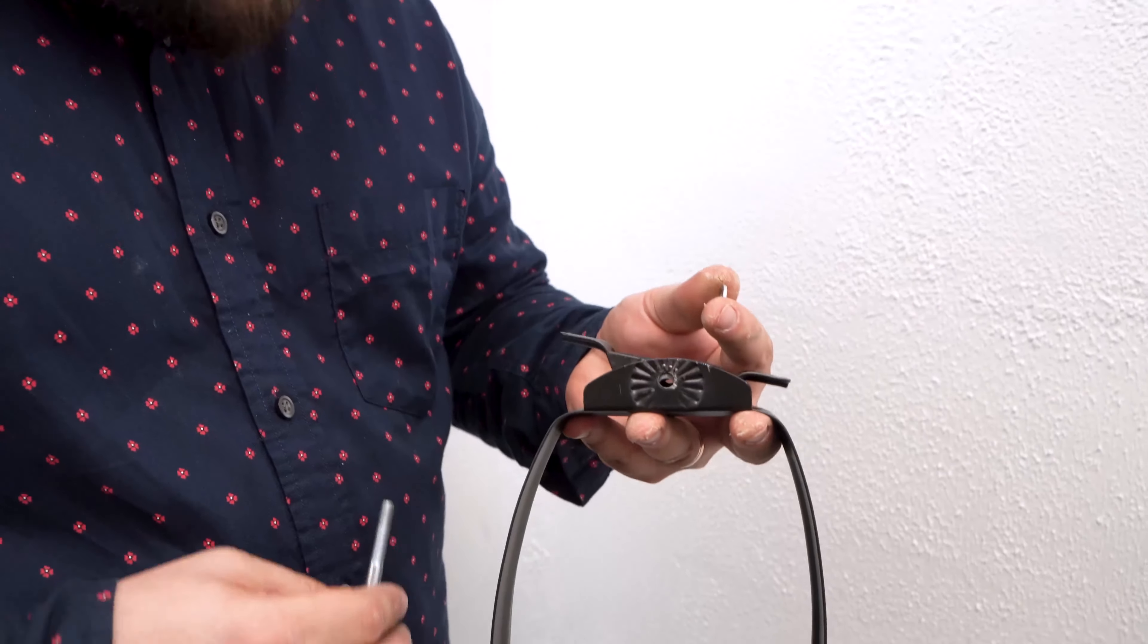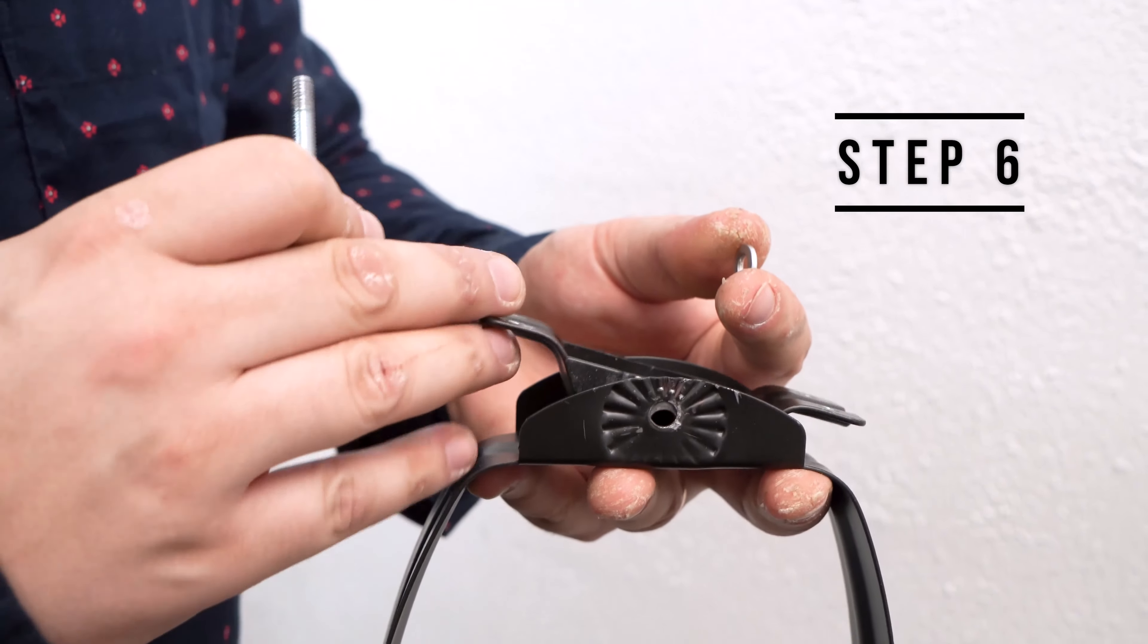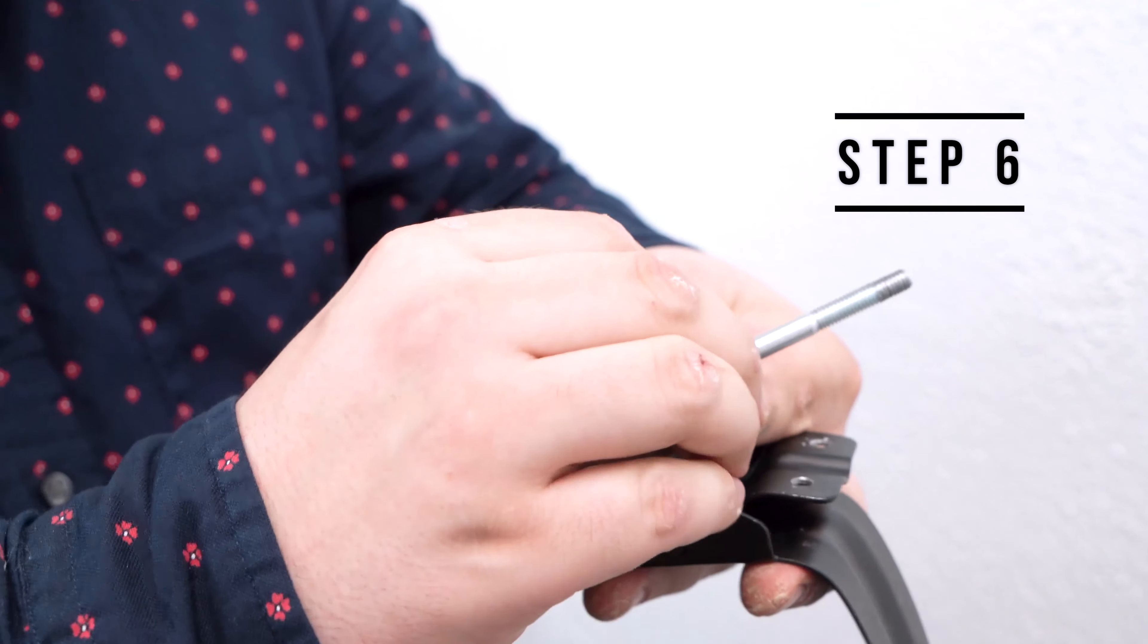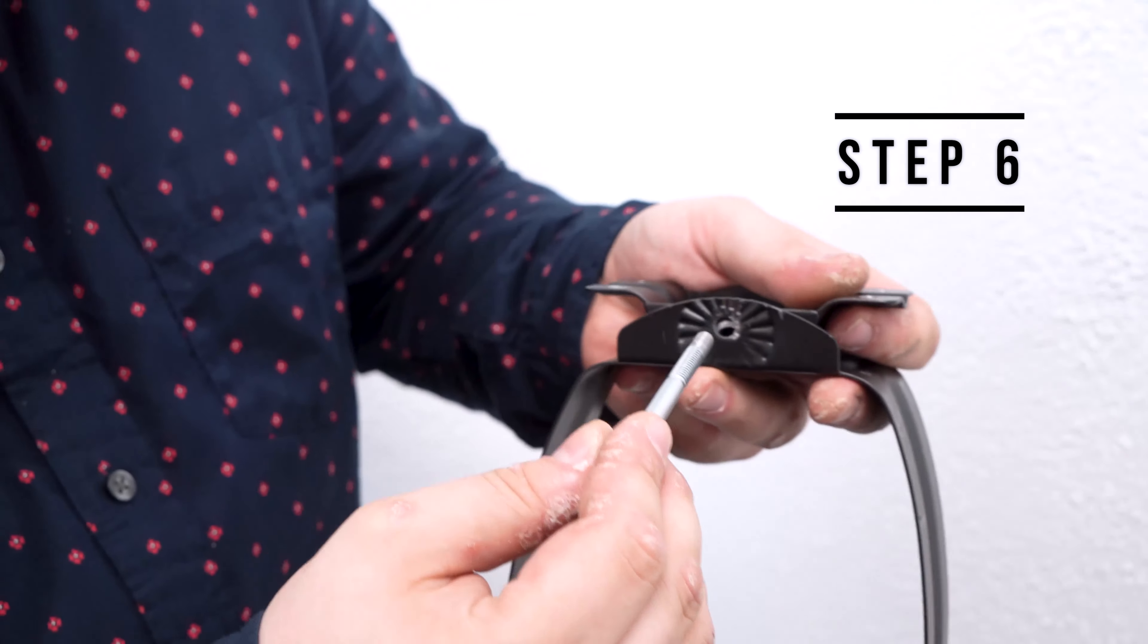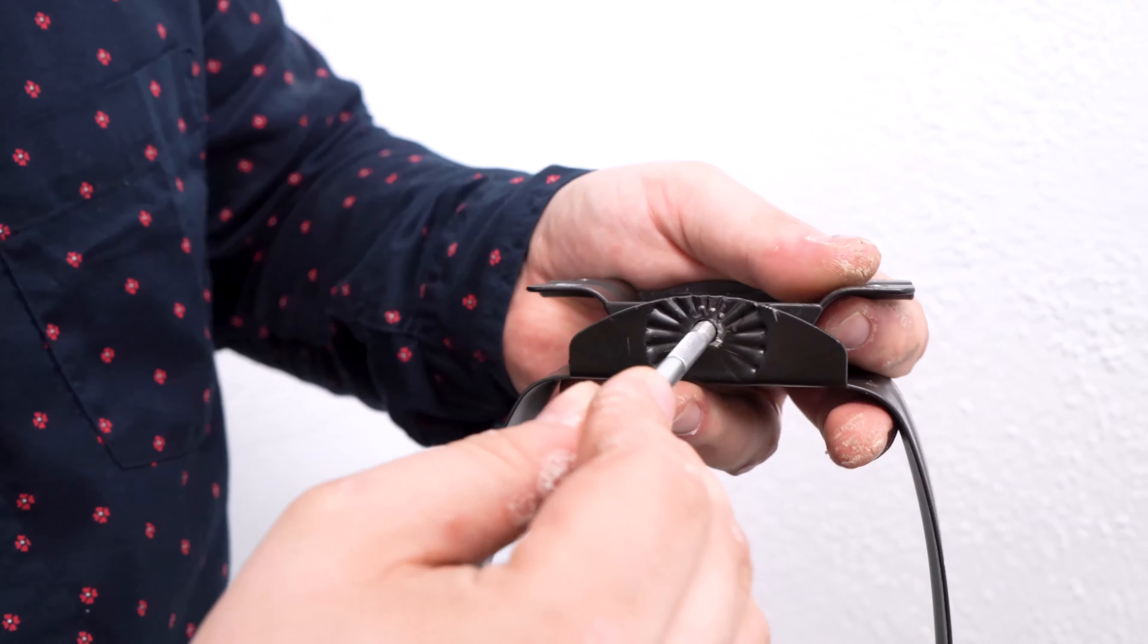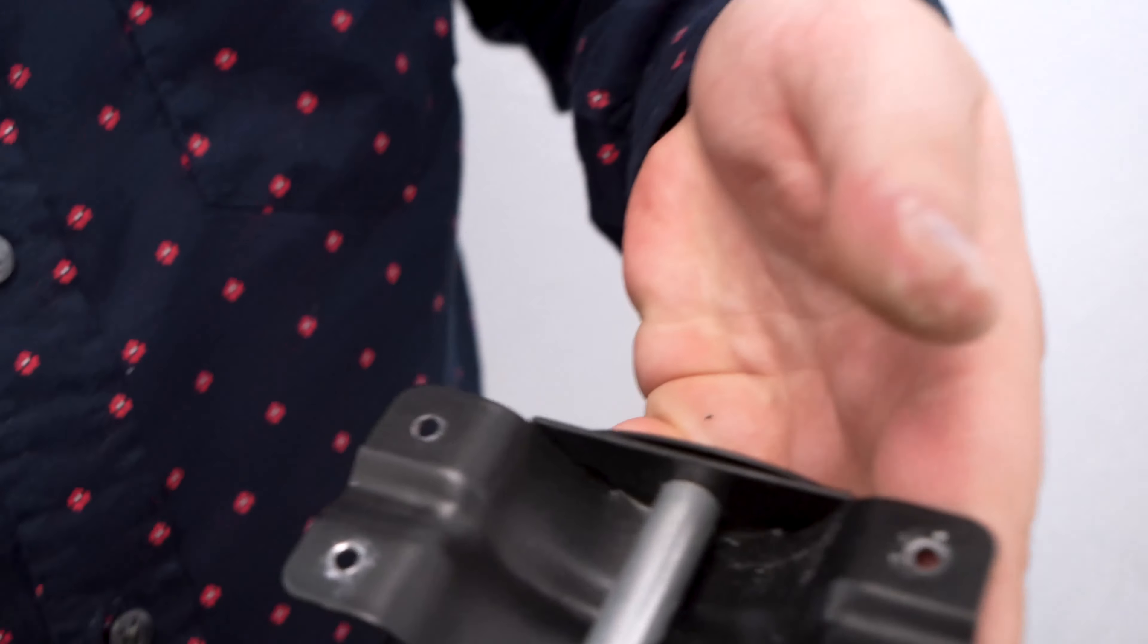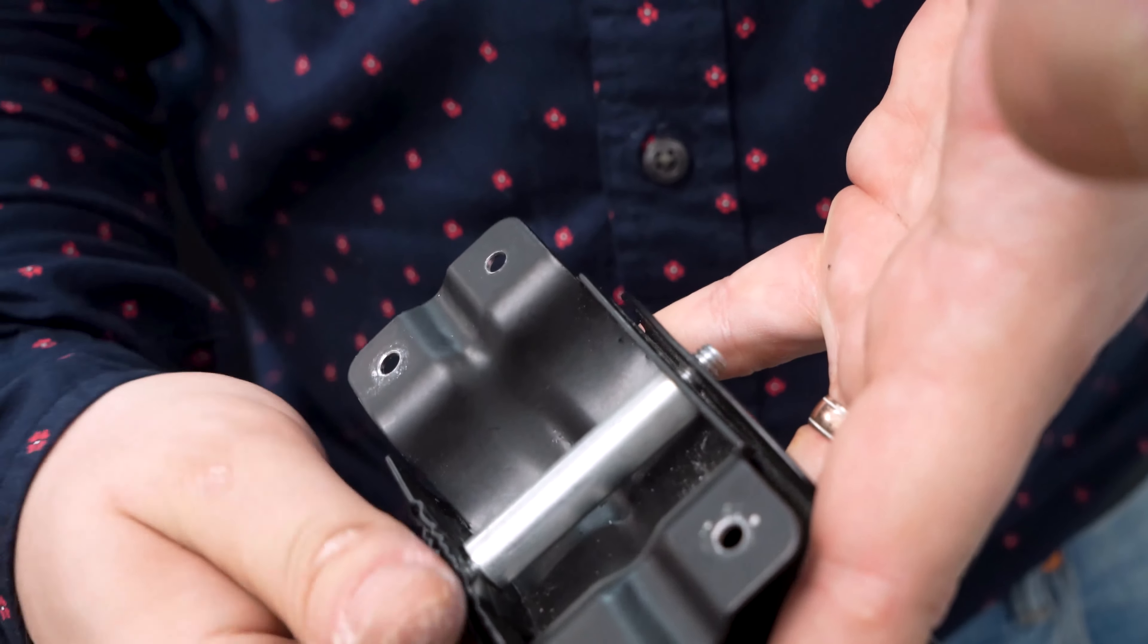Alright guys now for step number six we do have our brackets in place we're going to slide this hex bolt inside of the washer then using the stem side we're going to slide it all the way through until it comes out at the end.